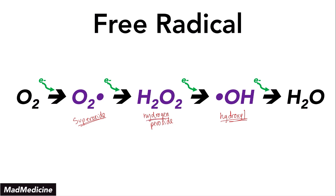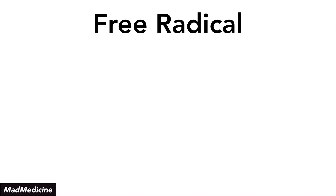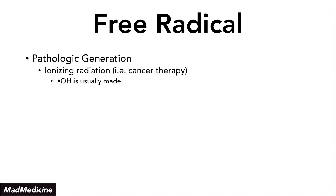This is the simple cascade you need to remember for free radicals because we're going to come back to it almost at the end of this lecture. Now let's talk about free radicals as the development pertains to pathologic generation. One of the most common ways our body can generate free radicals is through ionizing radiation — also known as cancer therapy — in which the hydroxyl free radical is what is usually produced.